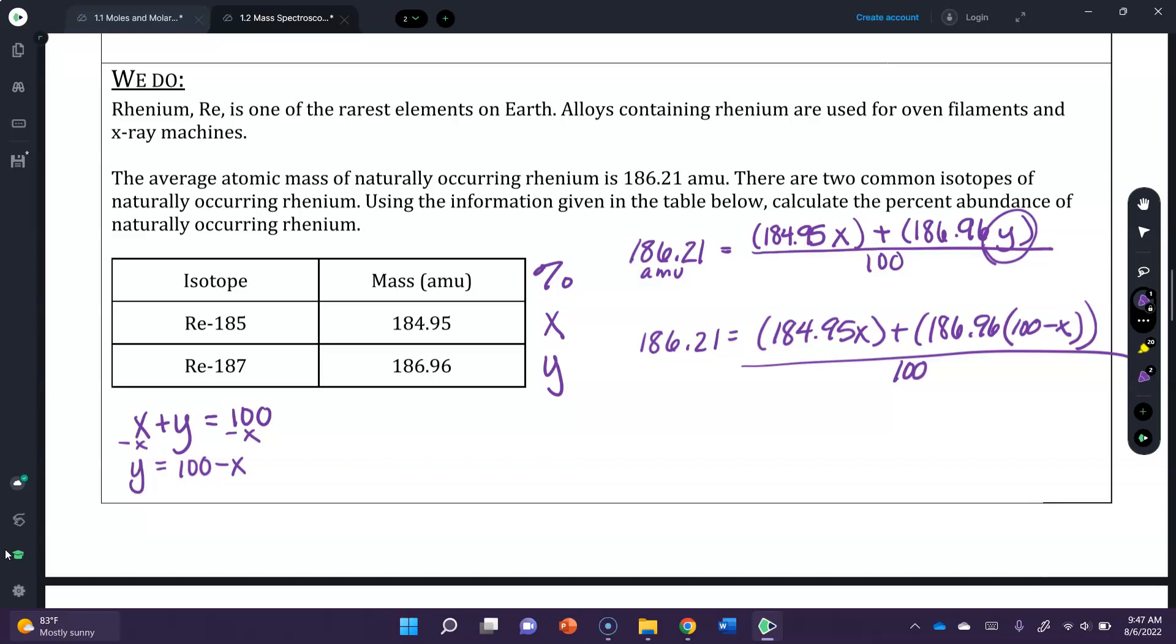Okay, let's work through this real quick and make sure you follow the same process. So I'm going to multiply both sides by 100, and I should get 186.21. Get rid of the decimal, so that's 18,621 is equal to 184.95x. And to save some time, I'm going to distribute here, and I should get 18,696 from this minus 186.96x. Pay attention to your sides. Now I'm going to combine like terms, so I'm going to subtract this number and move it to the other side. Oops, 696. I can't today, guys. The math's not happening.